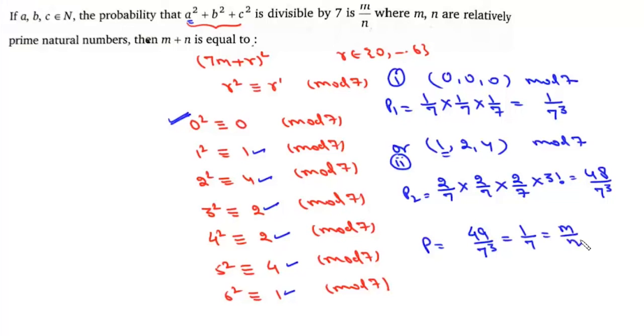And that's your m/n. Now the value of m + n is simply 8. So the answer to this question is 8.